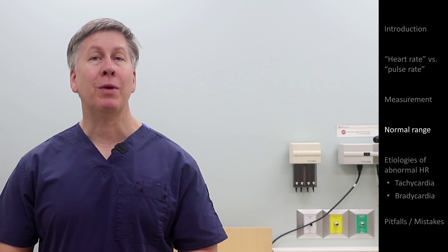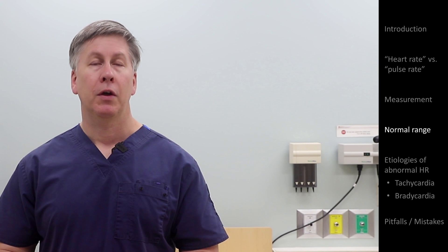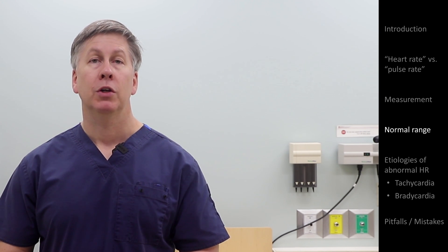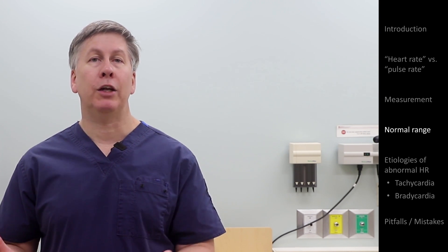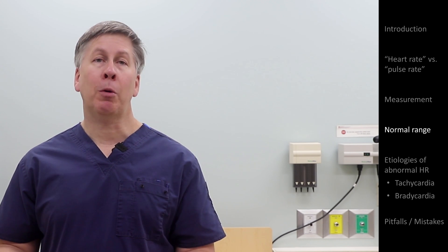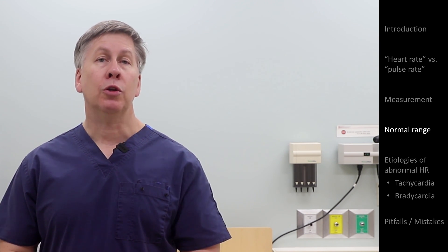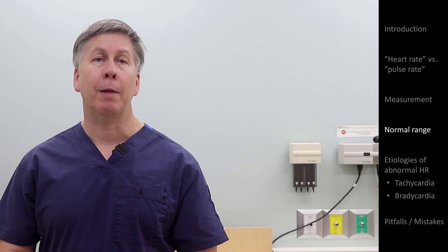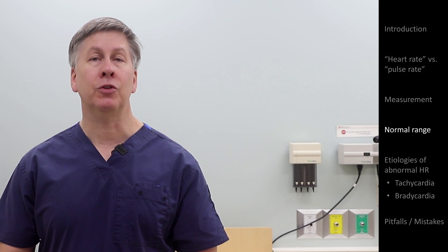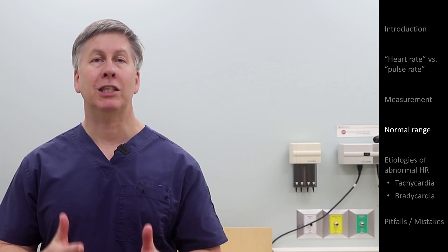Now that we have a value taken via some method, we need to compare it to the normal range. So what is the normal range for the heart rate? Well, if you've had any formal medical training — and maybe even if you haven't — you learned along the way that the normal range for the resting heart rate in adults is 60 to 100 beats per minute.